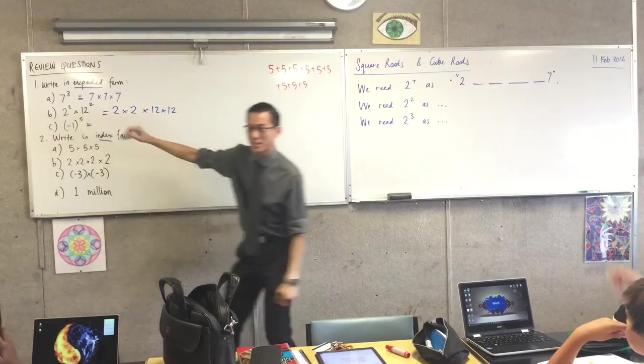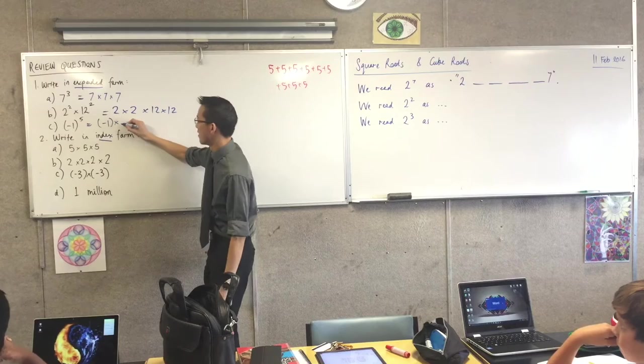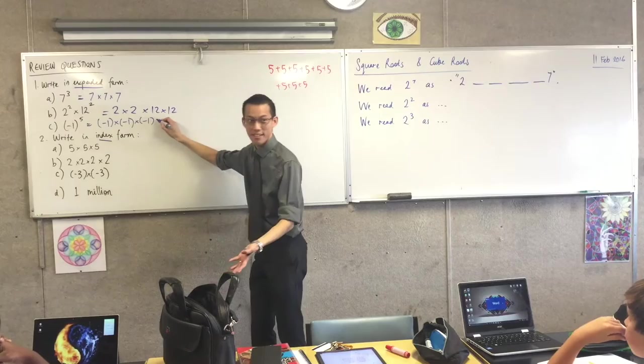Okay. Last one, someone who hasn't said anything yet. Yeah, Aiden. Bracket negative one bracket times bracket negative one times, and so on, so on. Yep. Good. And we do it? Five times. Five times. Very good.